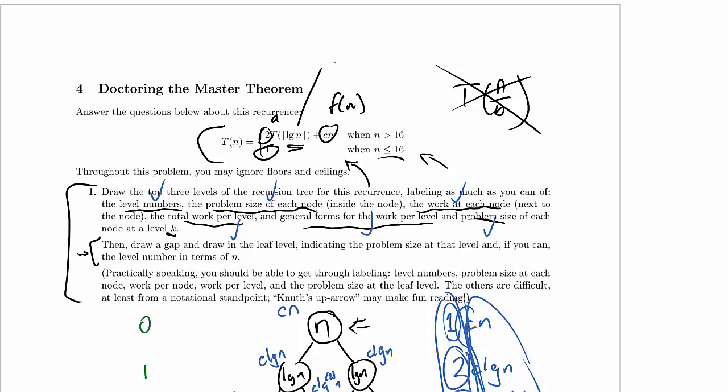But this is not of the form n over b. Okay, so that's not an x. That's a no, not n over b. It's the log of n. That's just not n over b. So the pattern doesn't match. Can't use the master theorem. That's all there is to it.